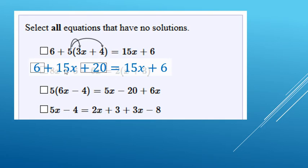Now over here, we still need to add like terms. So we're going to have the 15x, and then 6 plus 20 makes a plus 26. So notice the coefficients, the 15 and the 15, are the same, but the constants, 26 and 6, are different. Therefore, we have no solutions.